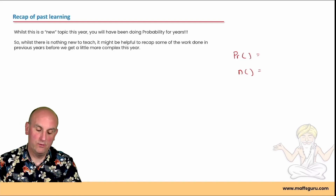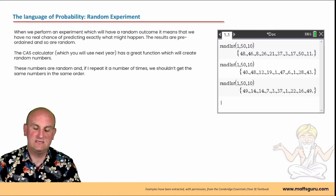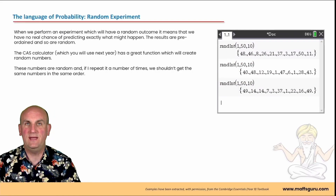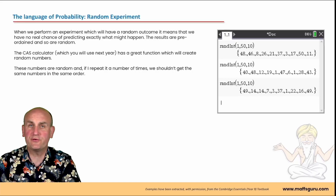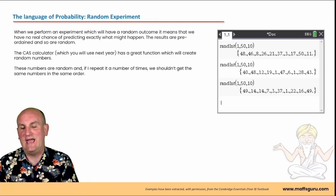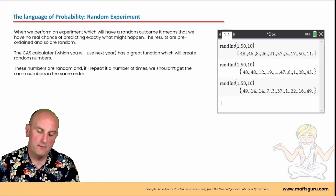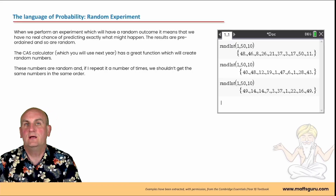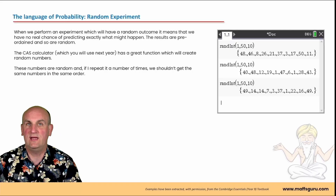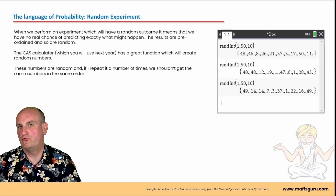Always cancel down with fractions. The language of probability: a random experiment. If I toss a coin, the chances are I'm not going to be able to guess what comes out. I can try and take a good guess because I know it's either going to be heads or tails, but I can't know for certain - the reason being it is random.